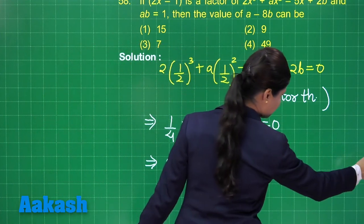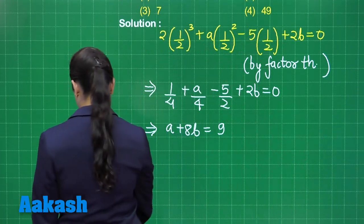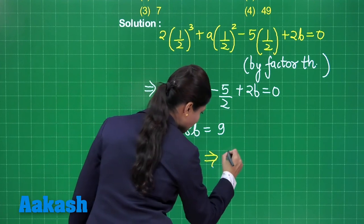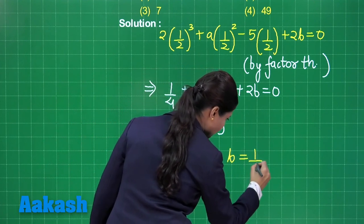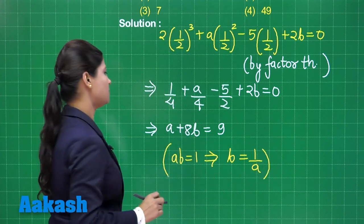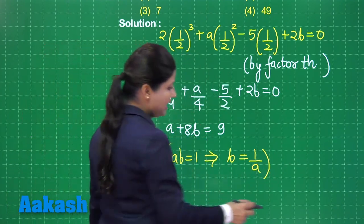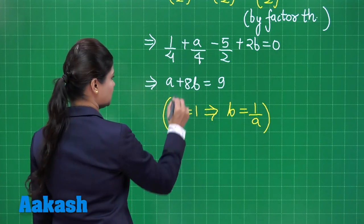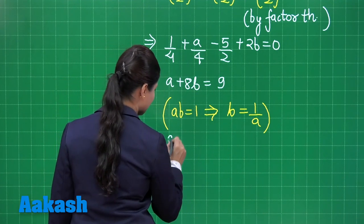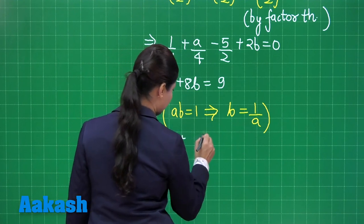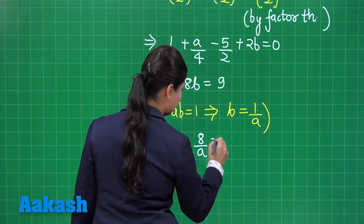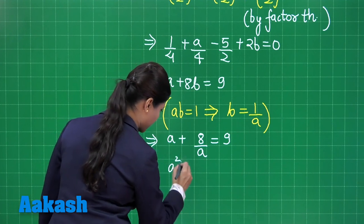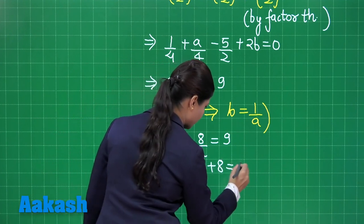Taking the condition that a into b is equal to 1, this implies b is equal to 1 upon a. Substituting b as 1 upon a gives the equation a plus 8 upon a equal to 9, and taking LCM gives the quadratic a squared minus 9a plus 8 equal to 0.